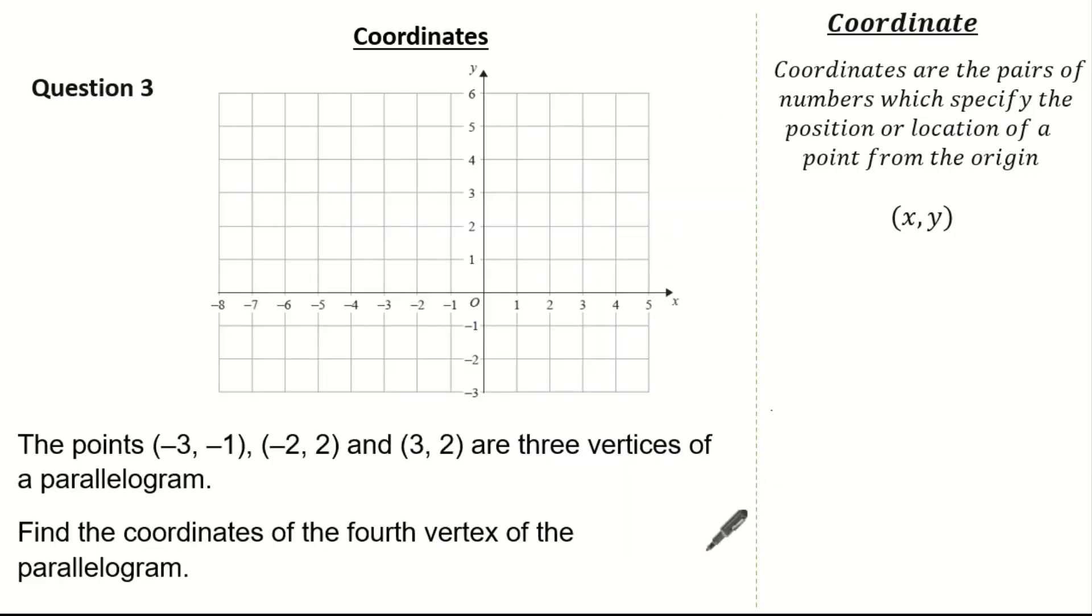Now let's have a look at another exam question. Here the question states that the points minus 3, minus 1, minus 2, 2 and 3, 2 are three vertices of a parallelogram. We're asked to find the coordinates of the fourth vertex of the parallelogram. To start you off I'm going to plot the coordinates minus 3, minus 1, minus 2, 2, 3, 2. See if you can identify the fourth vertex to make our parallelogram. Press pause if you need.